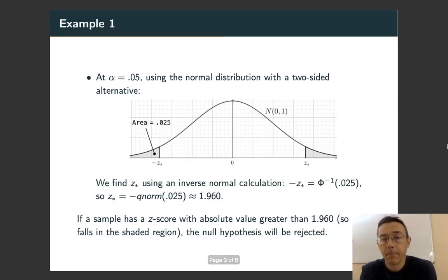Let's see an example. Suppose we have a two-sided alternative hypothesis and we're doing a test with the normal distribution at a significance level of α = 0.05. So α = 0.05 corresponds to this picture. We have a shaded area of 0.05, which means each half is 0.025.